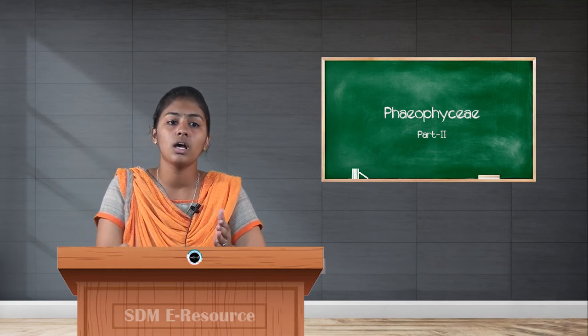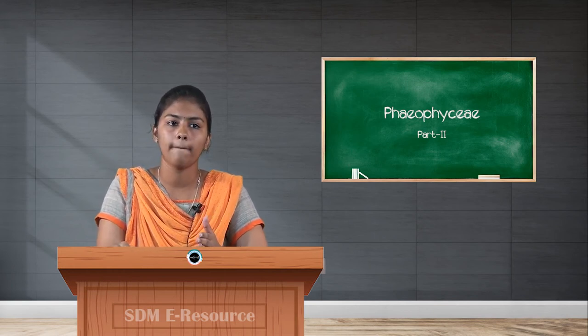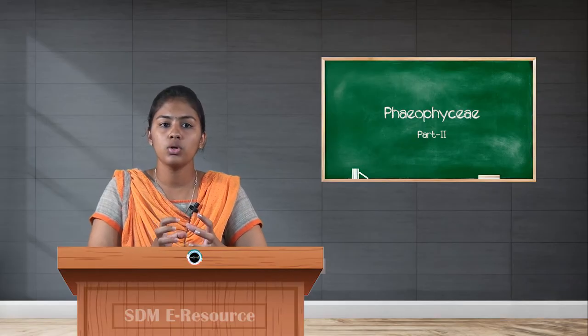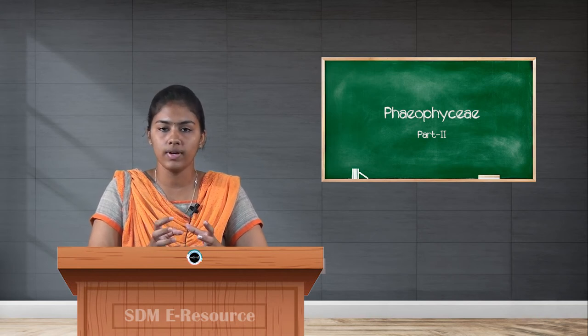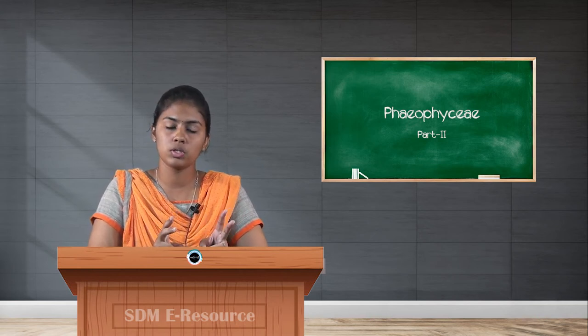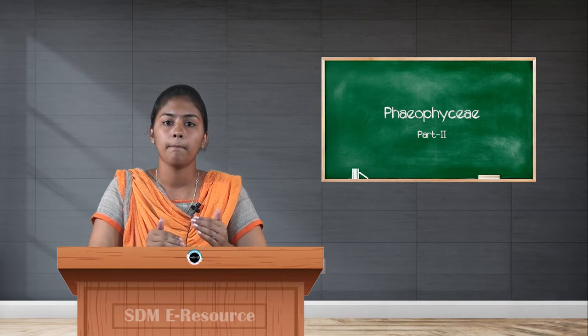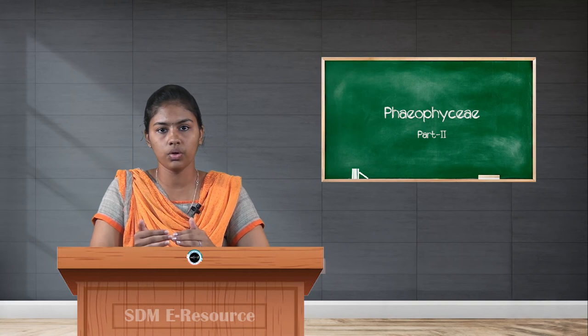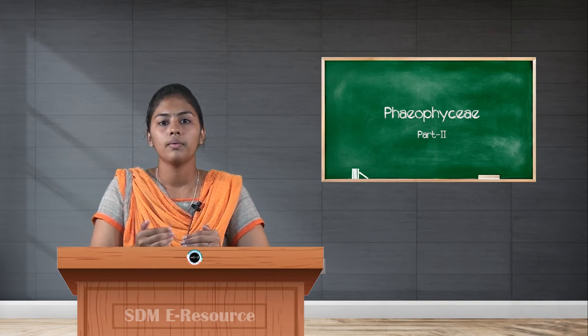This is called neutral type of sporangia. The third type is tetrasporangia, found in only a few members of Phaeophyceae. This sporangia is unilocular in nature, and only diploid plants produce — meiotically — 4 spores, of which 2 produce male thallus and 2 produce female thallus.